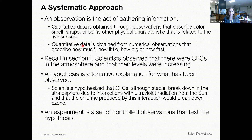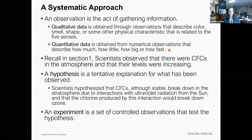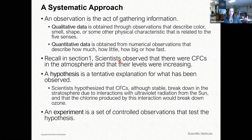Quantitative data is obtained from numerical observations that describe how much, how little, how big, or how fast. For example: 'I drove 70 miles per hour' or 'I am five feet four inches tall' — those are quantitative data points. If you look around you, you could take the mass of objects, look at volumes, check speed, or measure how fast you throw a baseball. Those are quantitative, while 'it's a nice day outside' or 'the grass is green' are qualitative data points.